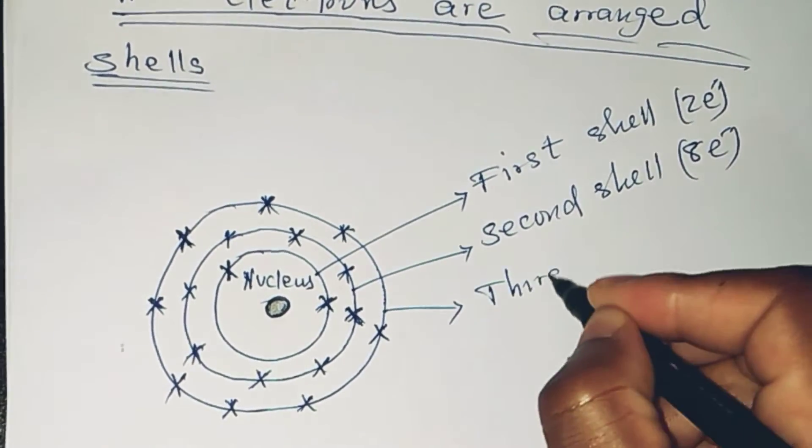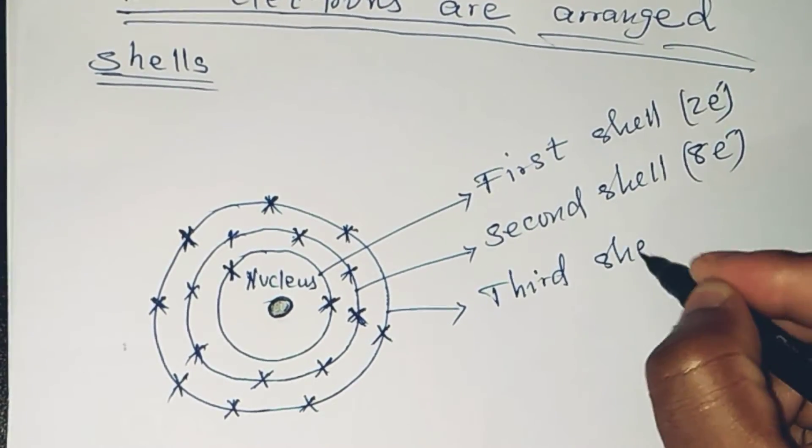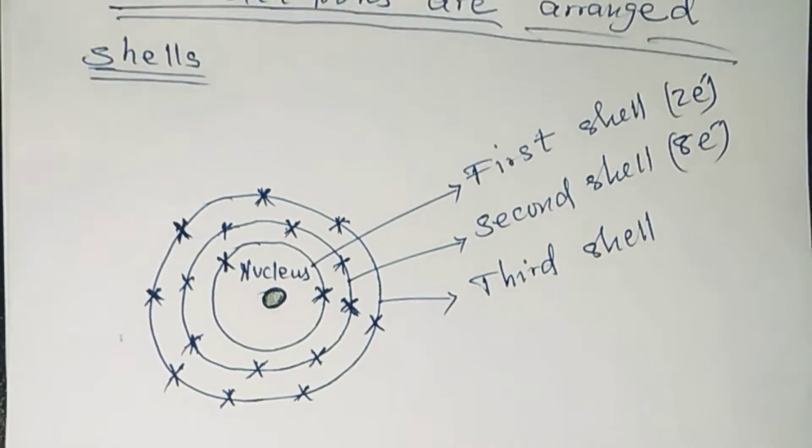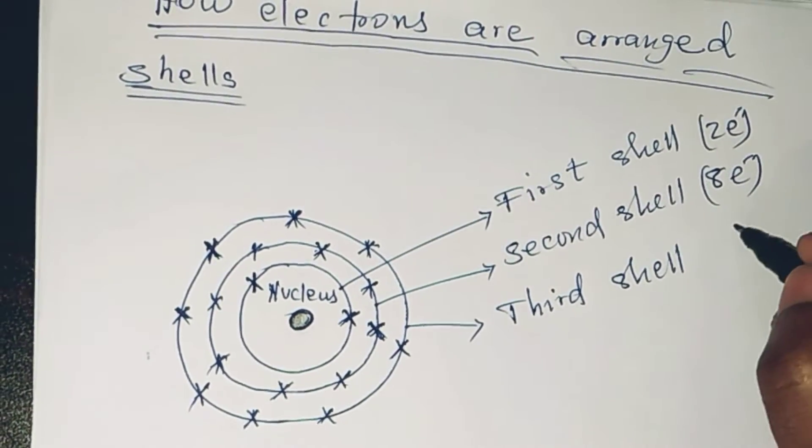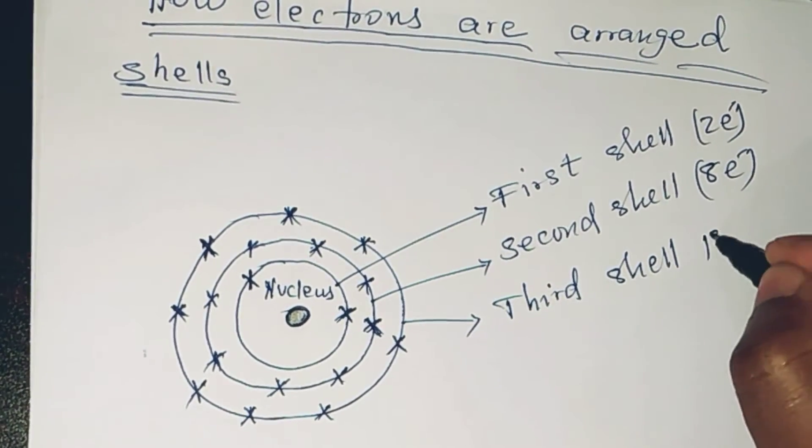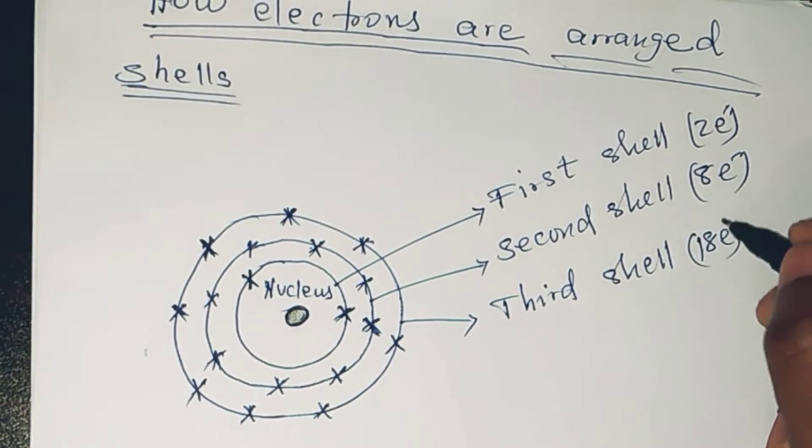The third shell holds 18 electrons but fills up to eight electrons. In a simple way, how are these representations shown?